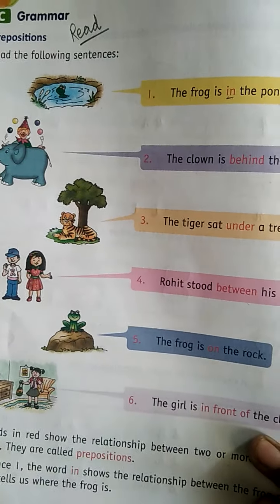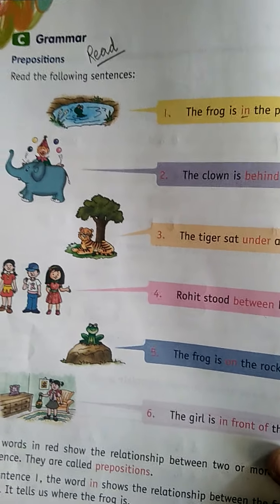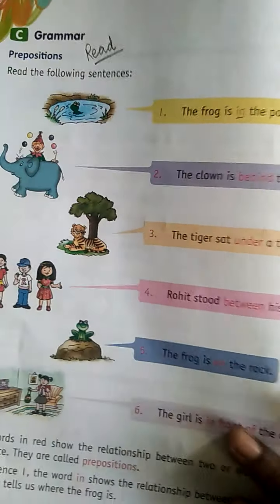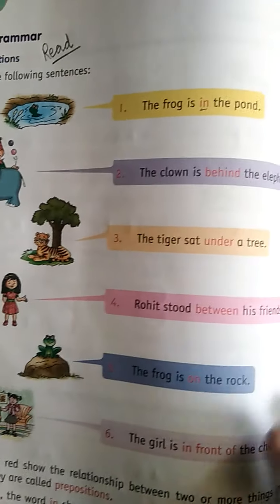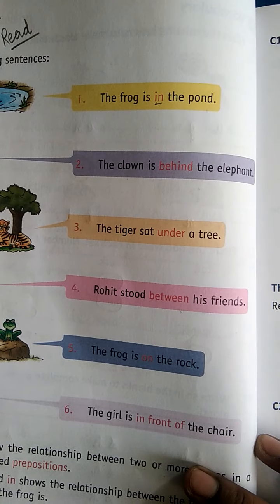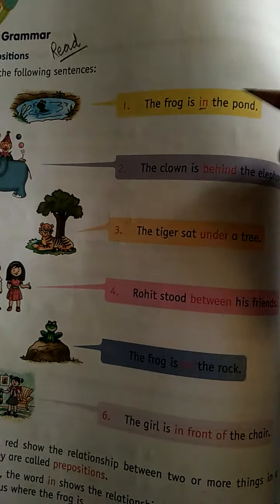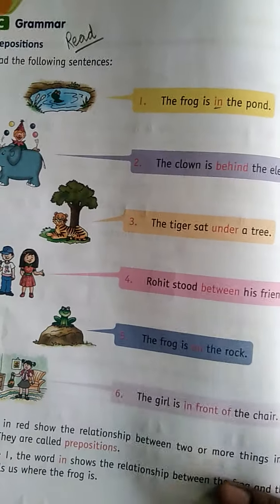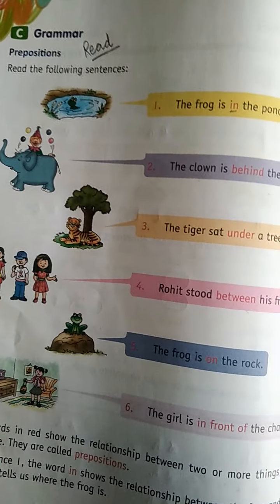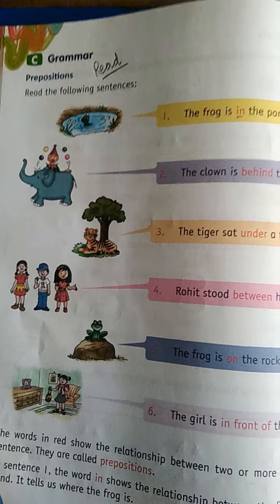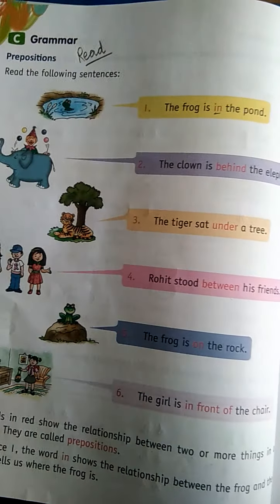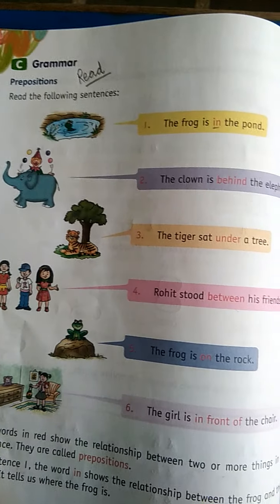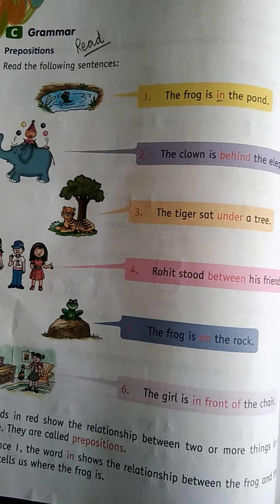In my previous video I have given work — read page number 66. I hope you have read it. Aap logon ne isko read kar liya hoga. In this chapter on page number 66, prepositions are given to you: in, behind, under, between, on, in front of. These are prepositions — aur bhi hote hain, inke alawa aapki book mein yeh diye hue hain toh aap inko hi achhe se yaad karenge. Prepositions kya hota hai? Kisi bhi sentence mein do ya more things ka relation jo hota hai, usse establish karta hai — two things ka relation batata hai.